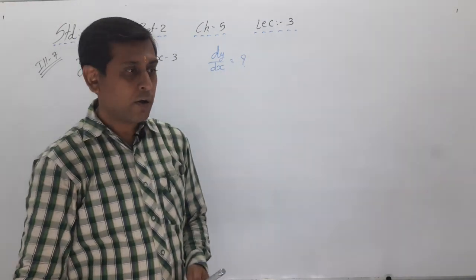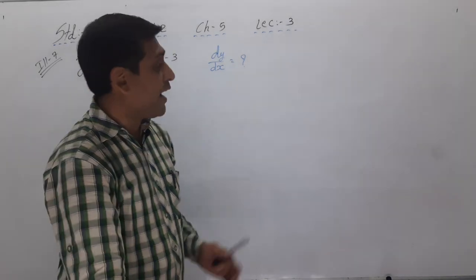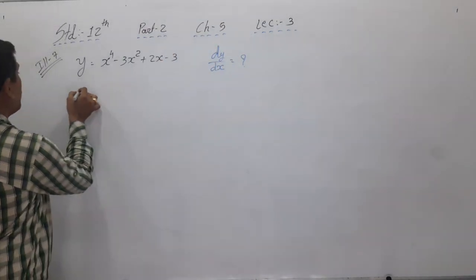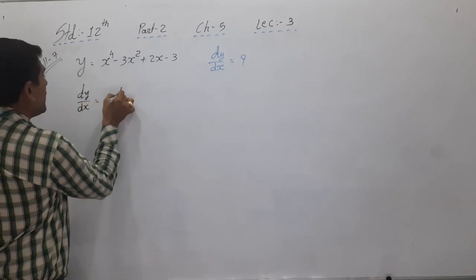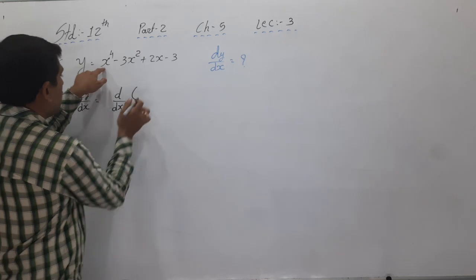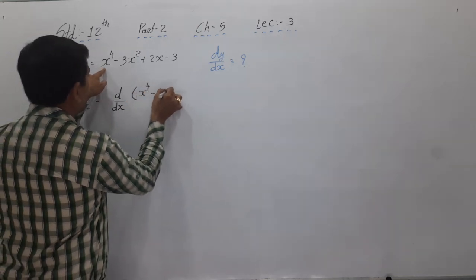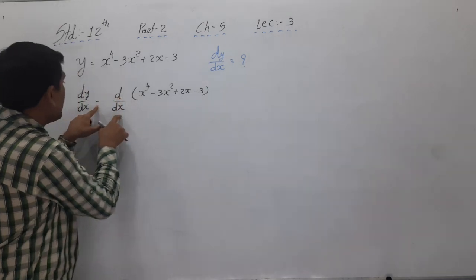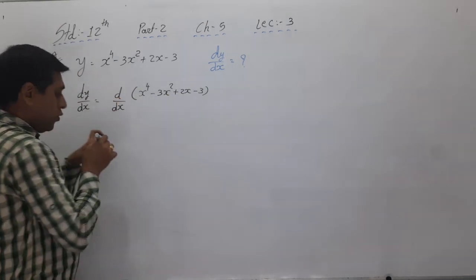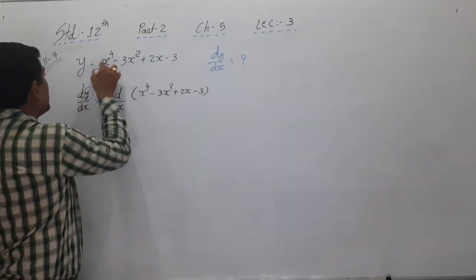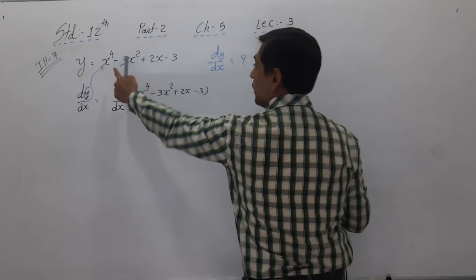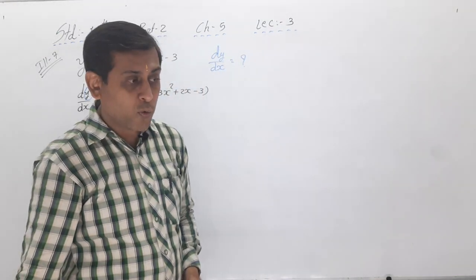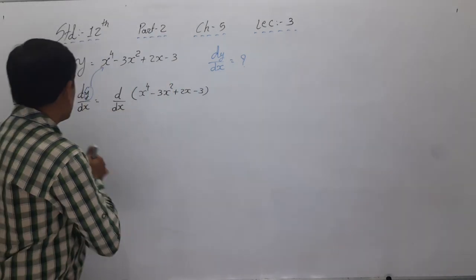So here, dy/dx — we have to find out. First of all we write: dy/dx = d/dx of y. Y means x⁴ - 3x² + 2x - 3. We write d/dx of x⁴ - 3x² + 2x - 3. Now we have to separate all the variables: d/dx(x⁴) minus d/dx(3x²) plus d/dx(2x) minus d/dx(3).